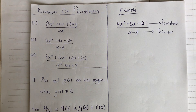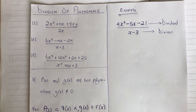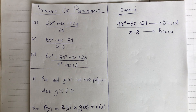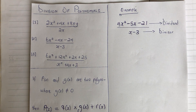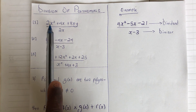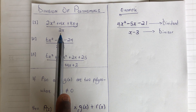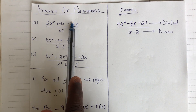Polynomial division is an algorithm for dividing a polynomial by another polynomial of the same or lower degree. There are various forms of division of polynomials. The first example is division of a polynomial by a monomial — so this is the monomial and this is the polynomial.